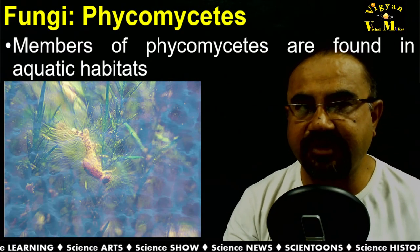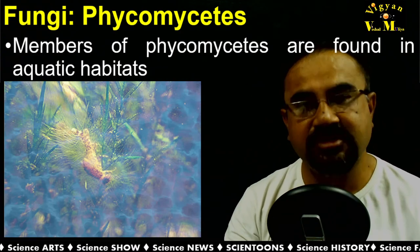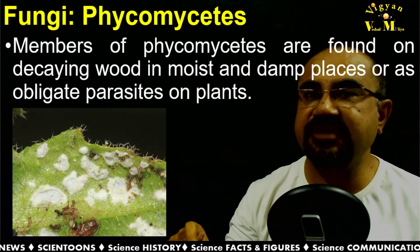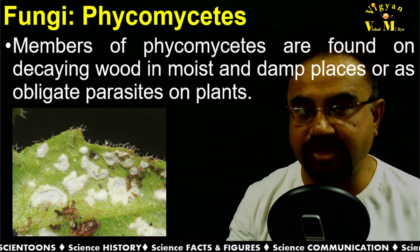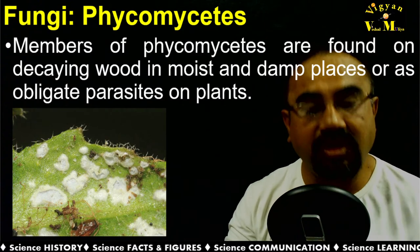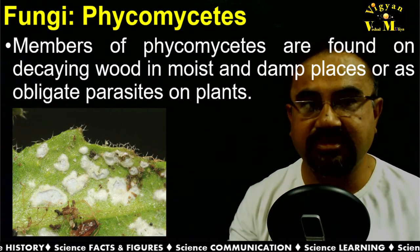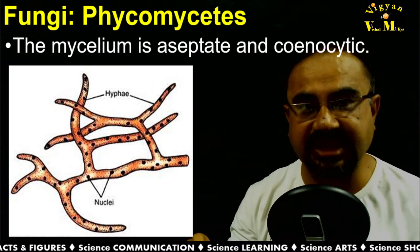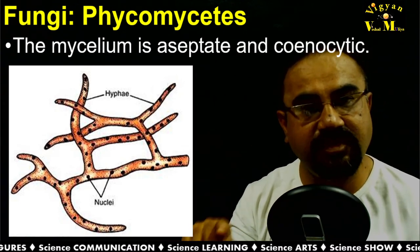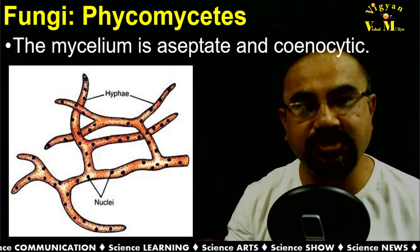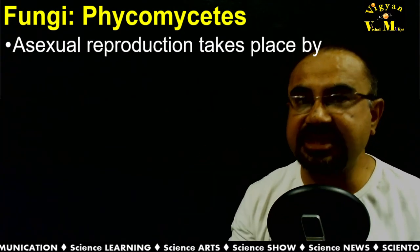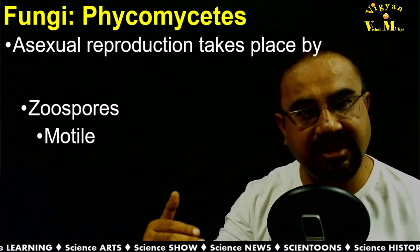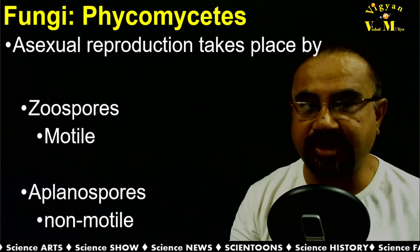Members of Phycomycetes are found in aquatic habitats — living in water — or on decaying wood in moist and damp places, or as obligate parasites on plants. The mycelium is aseptate and coenocytic. Asexual reproduction takes place through zoospores, which are motile, or aplanospores, which are non-motile.